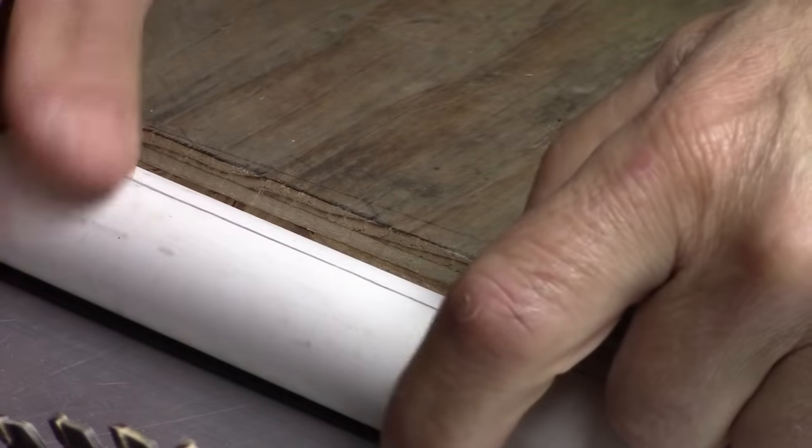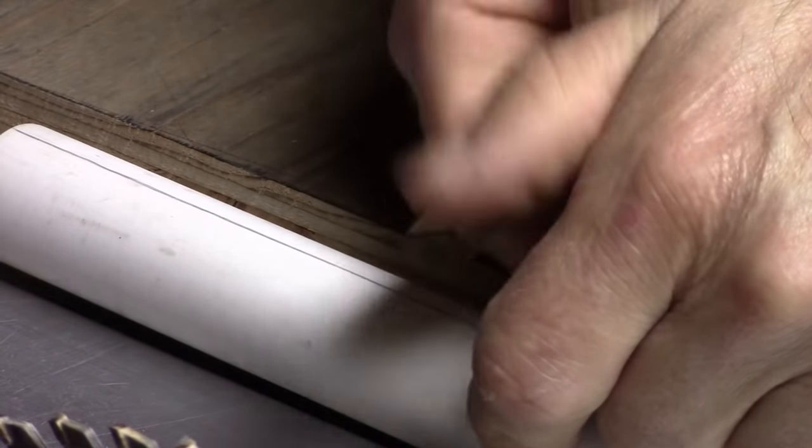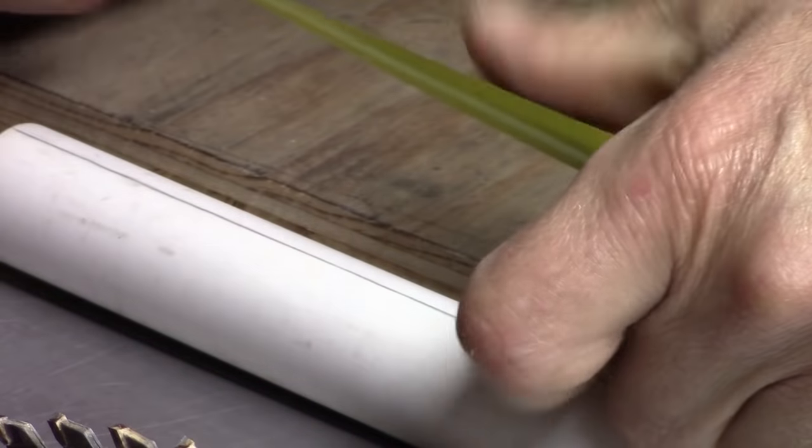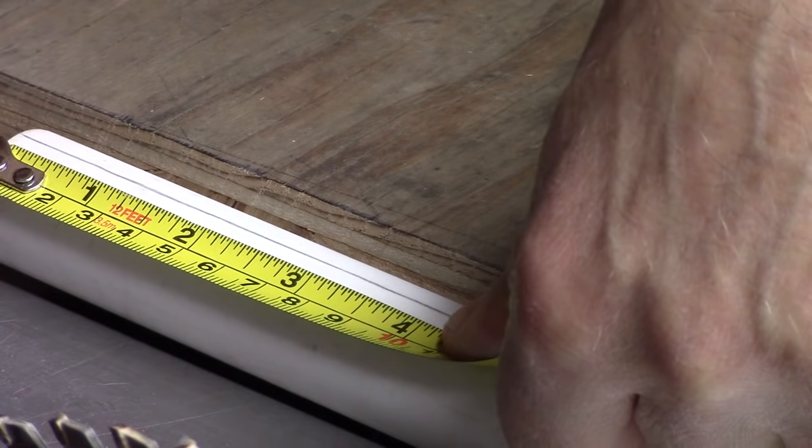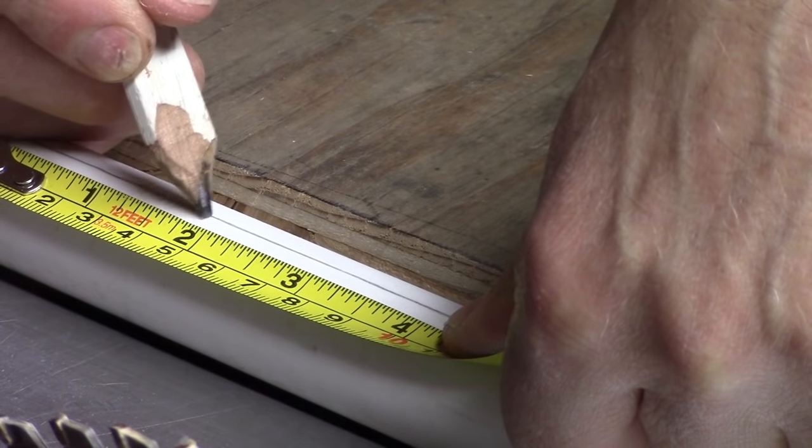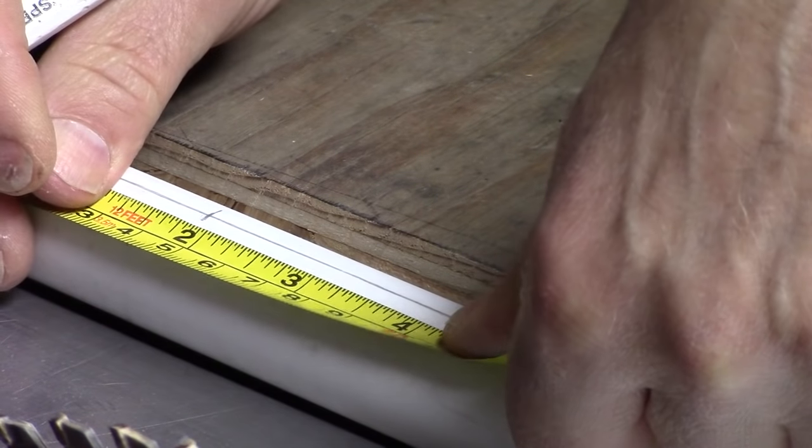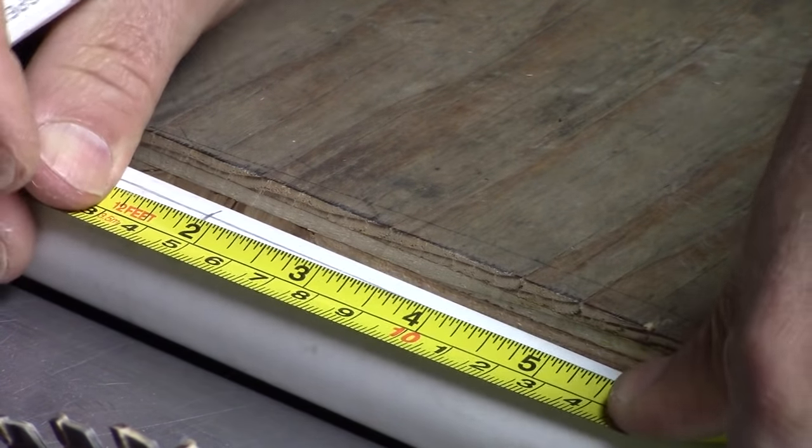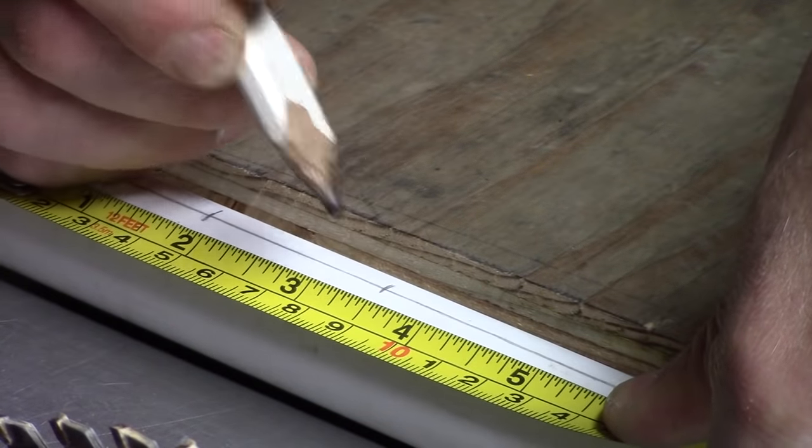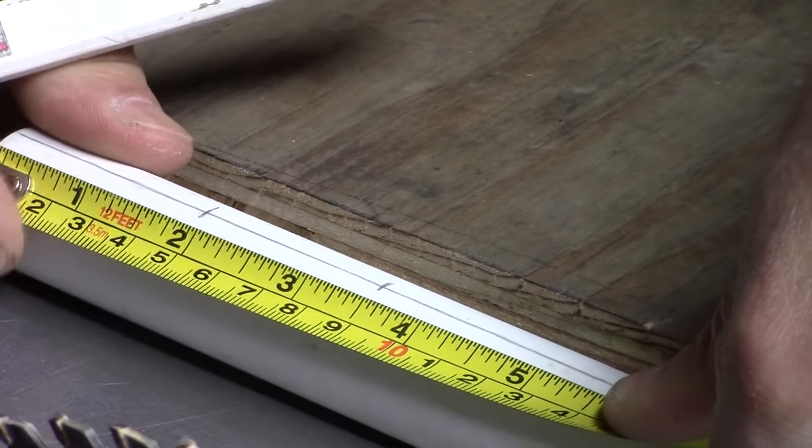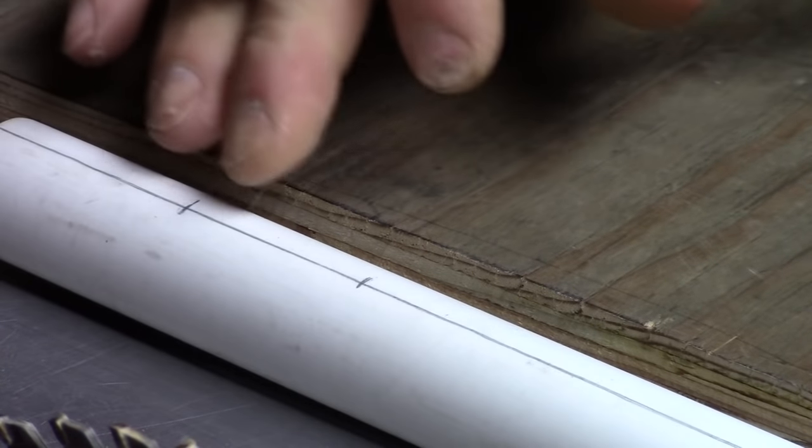This will now be our centerline where we're going to line up all the holes and everything on it. Now that we've got our centerline, we're going to make a mark one inch to one and seven-eighths right on the centerline to three and a half inches right on the centerline.